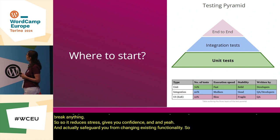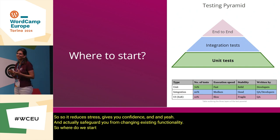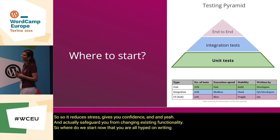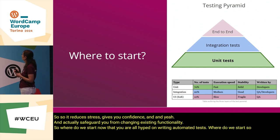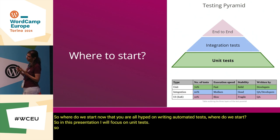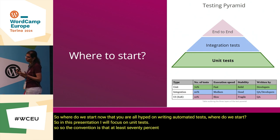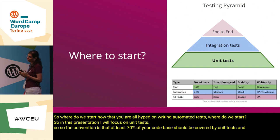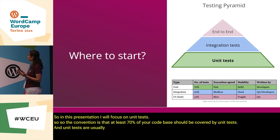So where do we start now that you're hyped on writing automated tests? In this presentation, I will focus on unit tests. The convention is that at least 70% of your code base should be covered by unit tests, and unit tests are usually easier to write and fast to execute.